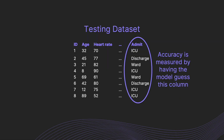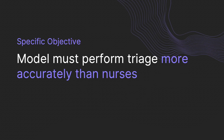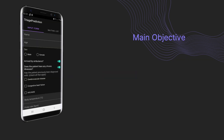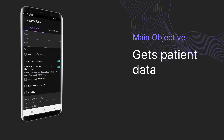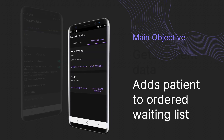We can then test our model's accuracy by having it predict the triage of past patients. With that in mind, what we want to do is to make a model that is more accurate than nurses. Said model will then be added to an Android application, which would accept patient data, predict triage, and then add patients to a waiting list ordered according to priority.